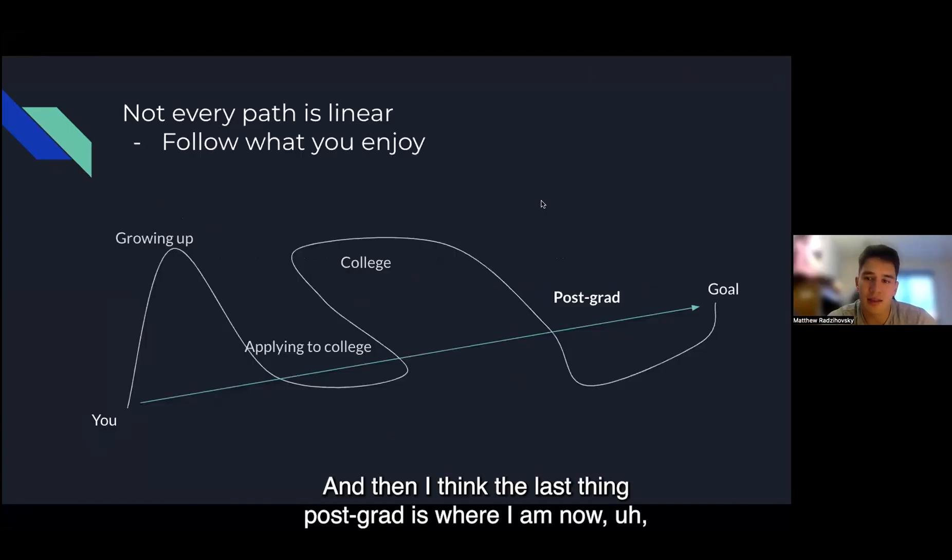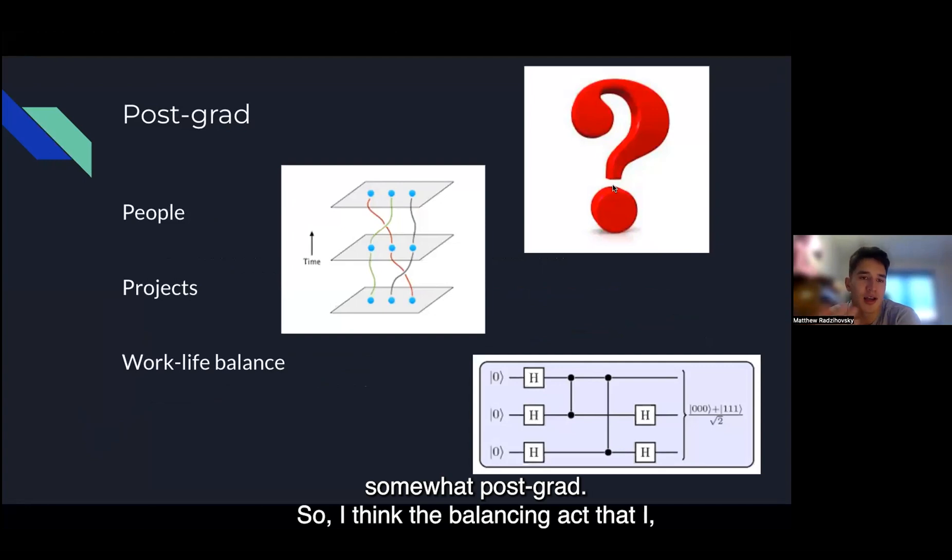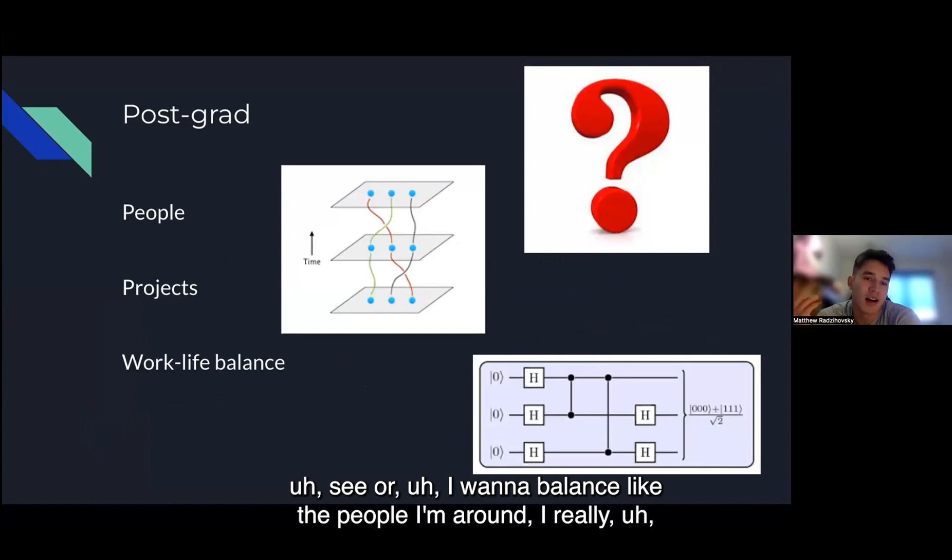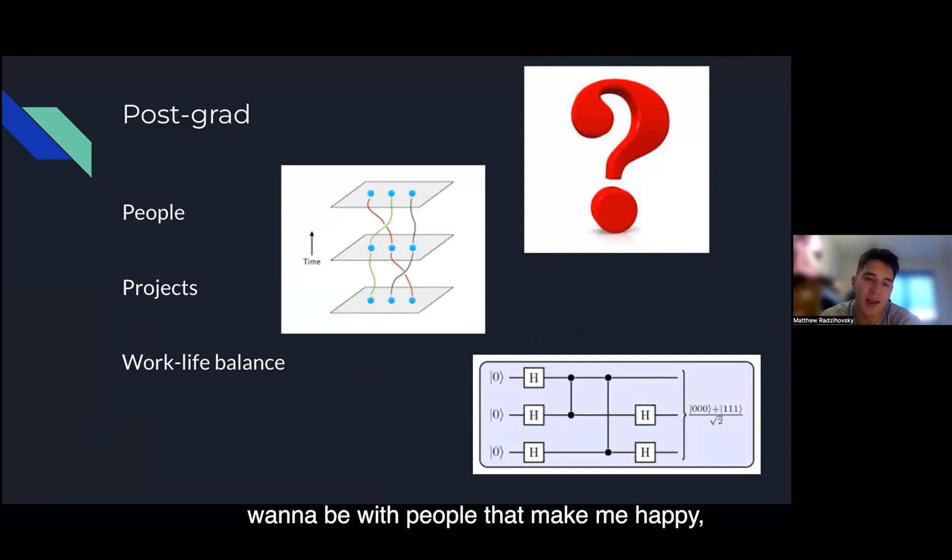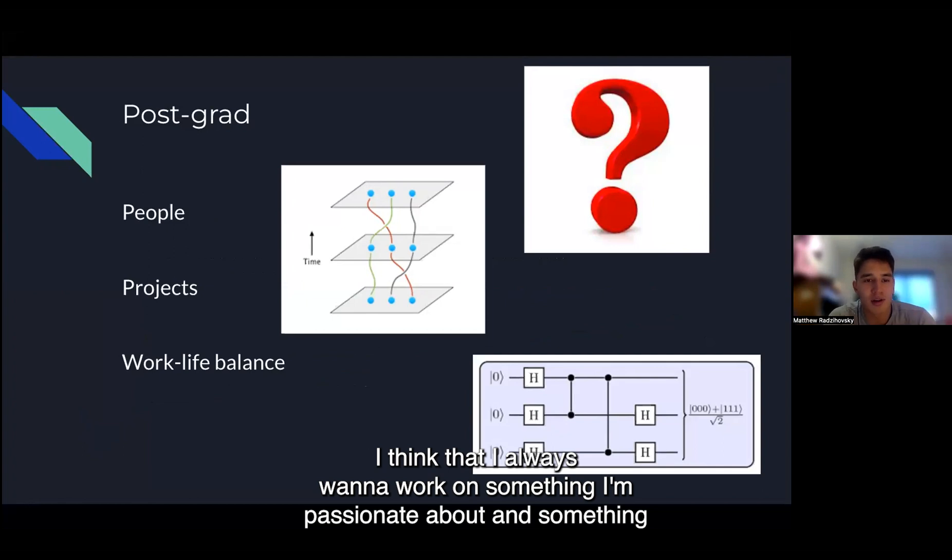The last thing is post-grad, where I am now, somewhat post-grad. The balancing act that I see here - I want to balance the people I'm around. I really want to be with people that make me happy, that have similar interests, or people that I can learn from. The project that I'm working on - I think I always want to work on something I'm passionate about and something that I think is impactful.